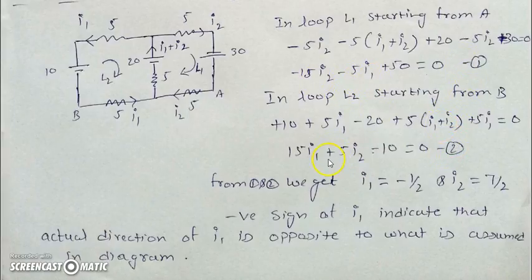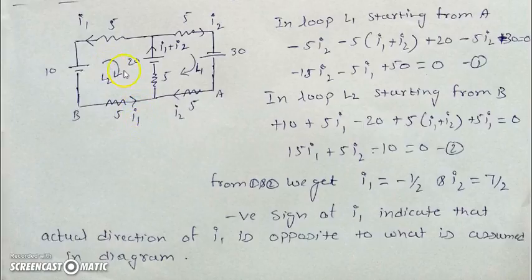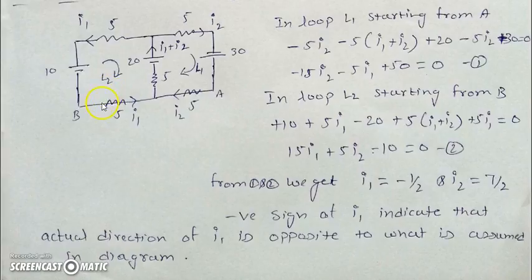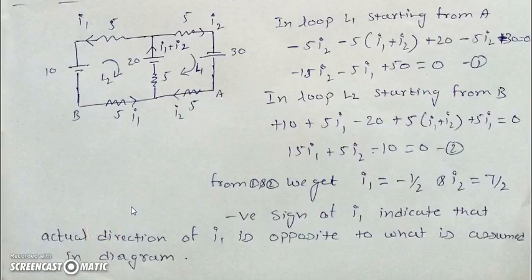From these two equations with two unknowns I1 and I2, we can solve them. One important thing to notice: if I1 comes out to be negative, it means the magnitude of the current remains the same but the direction is opposite to what we assumed. So the actual direction of that current through the 5 ohm resistance would be towards the left. The negative sign of I1 indicates the actual direction is opposite to what was assumed in the diagram. That's all about KVL and KCL. Look for the next video on the nodal method.